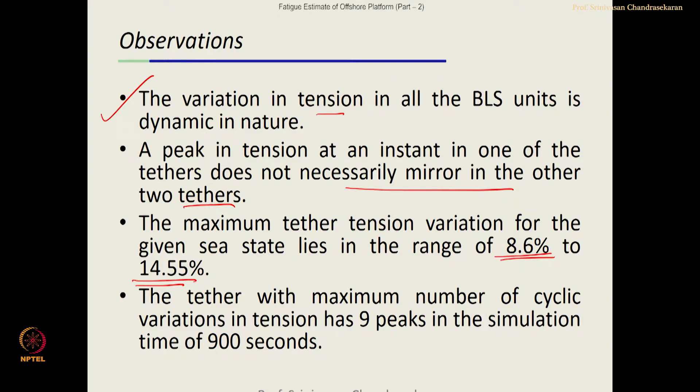The maximum variation varies anywhere from 14.55 percent to as minimum as 8.6 percent. The tether with maximum number of cyclic variation has 9 peaks in the simulation for about a period of 900 seconds.